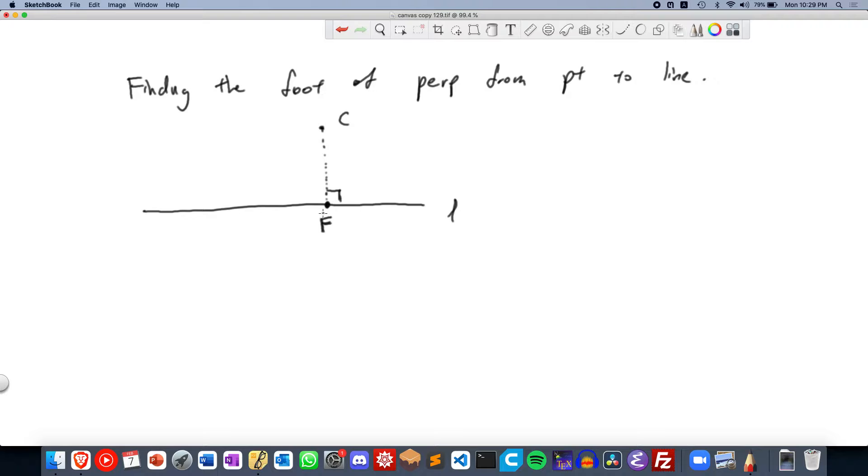And we'll see that today we'll be using the dot product. So now the dot product actually comes in useful when we want to find the projection. So to find the position vector of F, in other words OF,